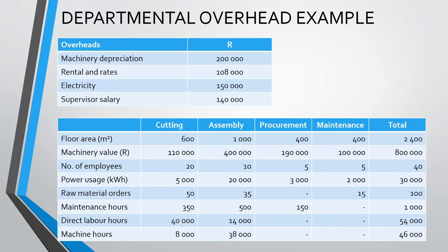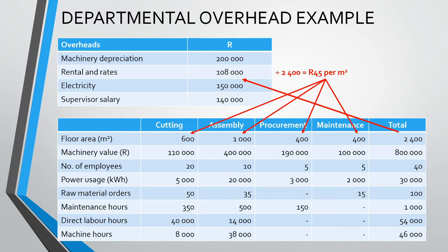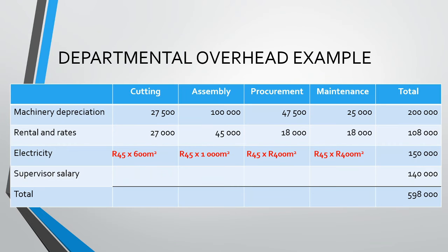We follow the same process for our next cost: rates and rental. Rates and rental are probably best described by floor area, as a bigger floor area means we would end up paying more rental and rates. We divide the 108,000 Rand by the total floor area of 2,400 m² to arrive at a cost of 45 Rand per m². We then multiply this 45 Rand by the floor area of each department individually and add these values into the row for rental and rates under the relevant department.